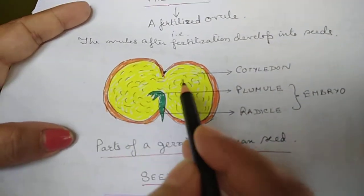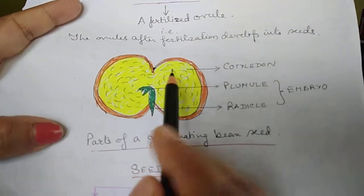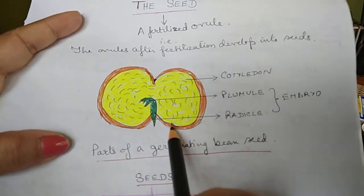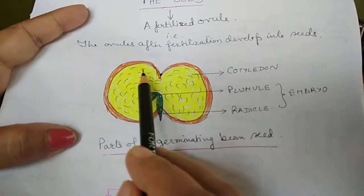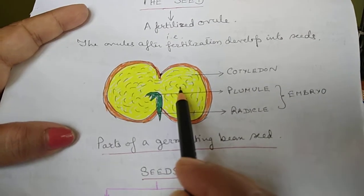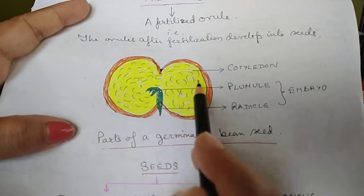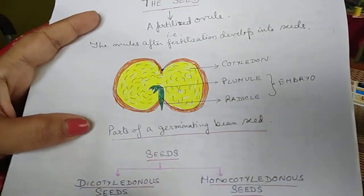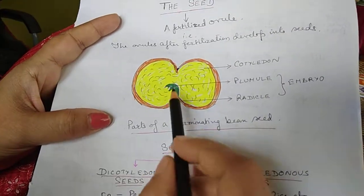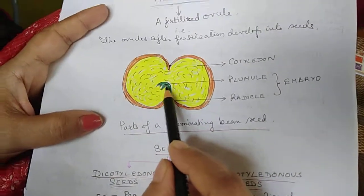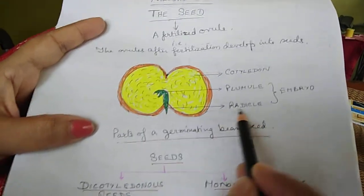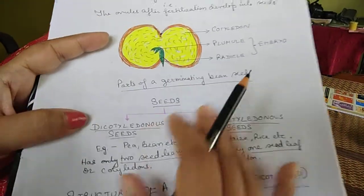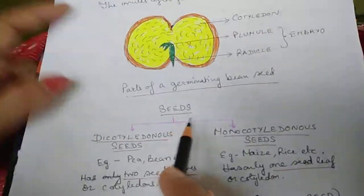If we consider a bean seed and cut it open, we can see that inside the seed there is a yellow part called the cotyledon, and a green part — a small plant-like structure. The upper part is the plumule and the lower part is the radicle. This is the embryo.